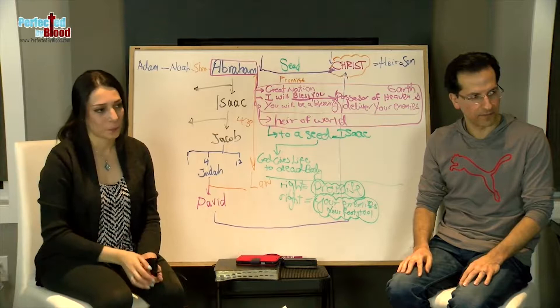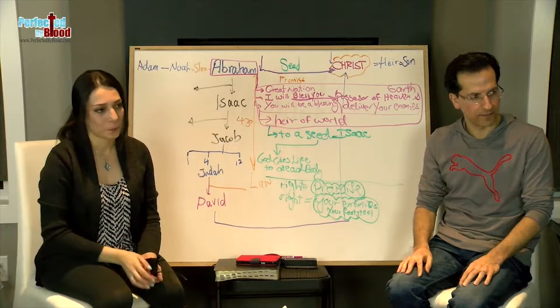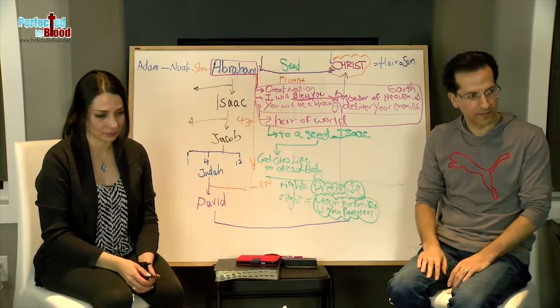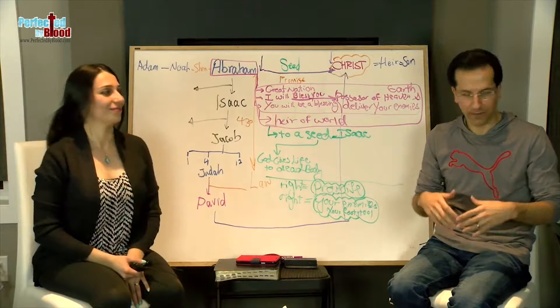The gates of Hades shall not prevail against it. Jesus comes in Revelation chapter 1 and says, 'I have the keys of death and Hades.' Why? Because he possessed the gates of the enemies. The promise was fulfilled.